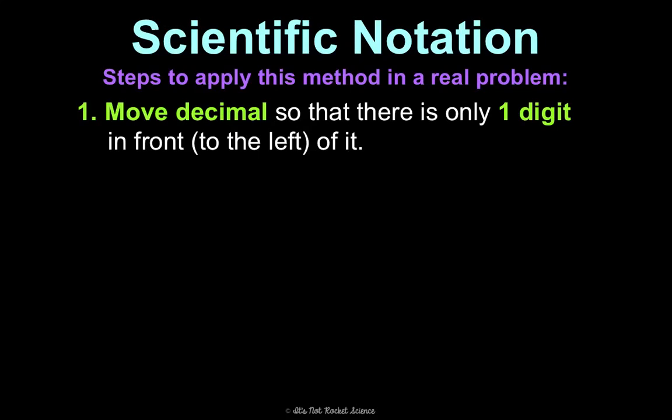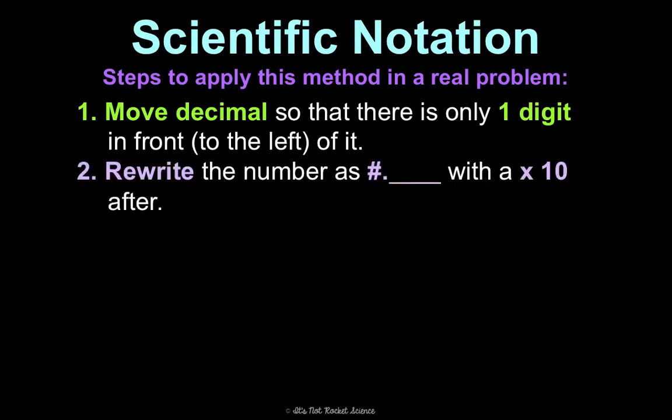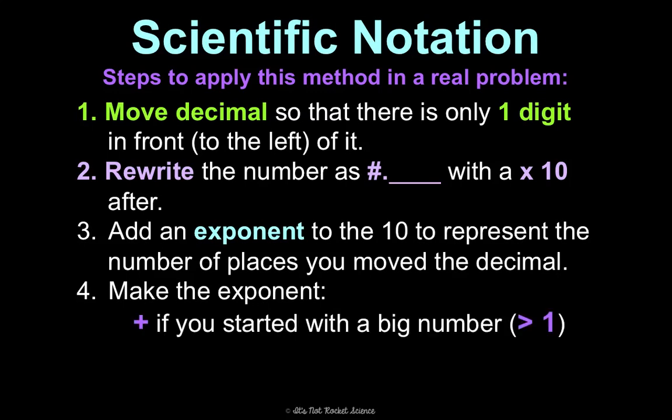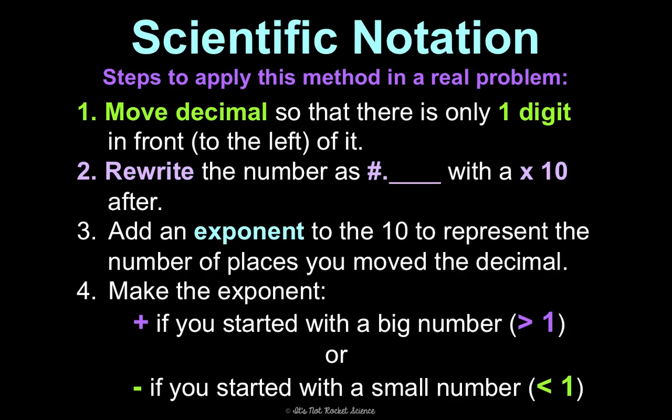Here are the steps. First, move the decimal so that there's only one digit in front to the left of it. Then you're going to rewrite the number as that digit, decimal, and then any other digits that are there. If there's no other digits, you just put a 0. And then put times 10 after it. Then you need to add an exponent right here to represent the number of places that you moved that decimal in step 1. So, did you move it 3 times, 4, twice, once? Now, for that exponent, you need to determine if it should be positive or negative. The easiest way that I remember this is positive if you started with a big number, so a number greater than 1. Or, it's negative if you start with a small number, so a number less than 1.